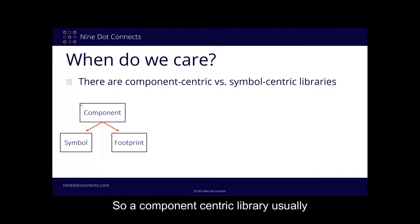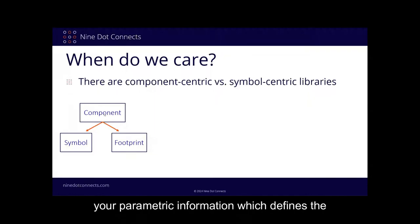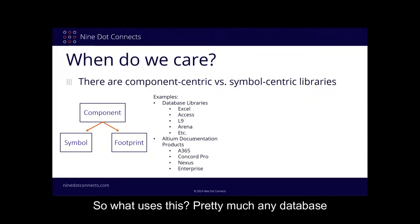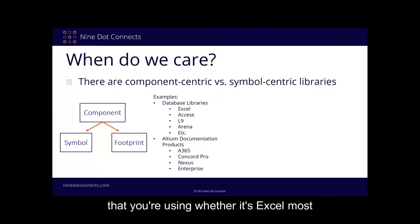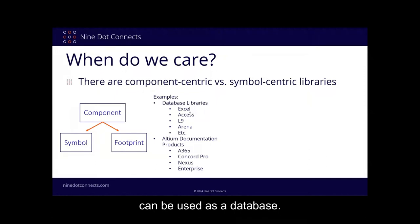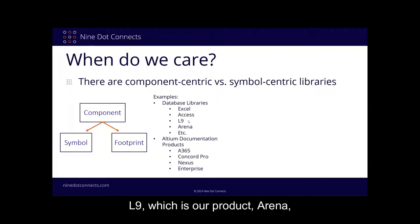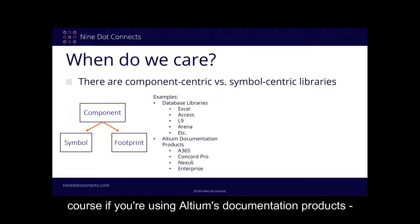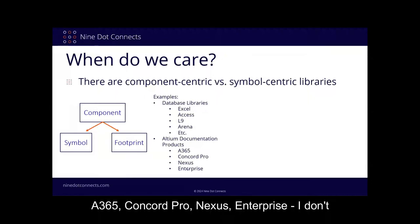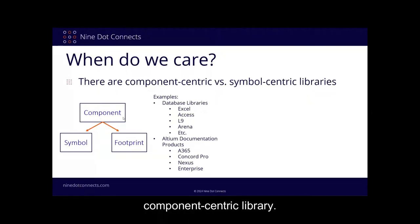A component centric library usually consists of three types of files: a component file, which is the definition of your name, description, and parametric information; and links to a symbol graphic and a footprint graphic. This format is used by pretty much any database — Excel, Access, L9, Arena — anything from the largest databases to Excel. If you're using Altium's documentation products like A365, Concord Pro, Nexus, or Enterprise, it's all the same code base. It's a component centric library.